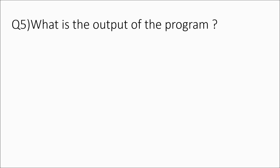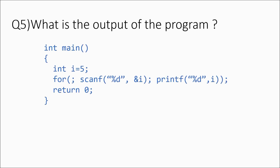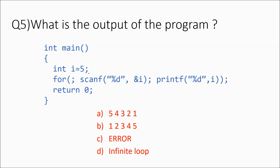Question 5: what is the output of this program? We have int i = 5. Then there is a for loop with no initialization section. In the condition-checking section there is a scanf which takes an integer input and stores it in i. In the increment/decrement section there is a printf which prints i. Note there is a semicolon after the for loop, so the return statement is not inside the loop body.